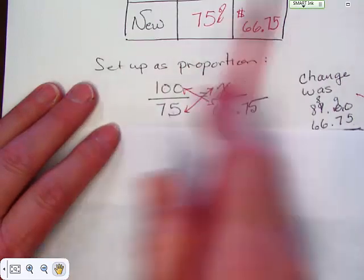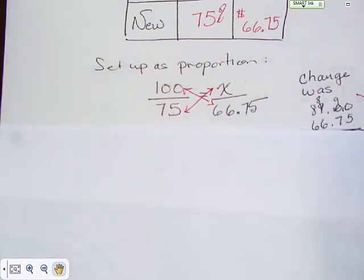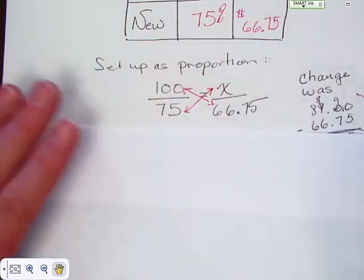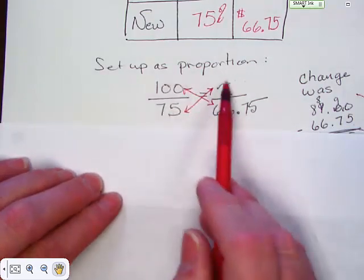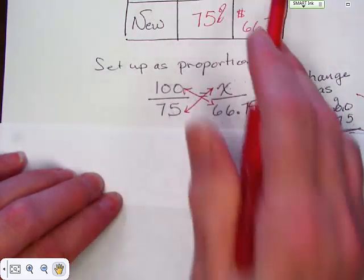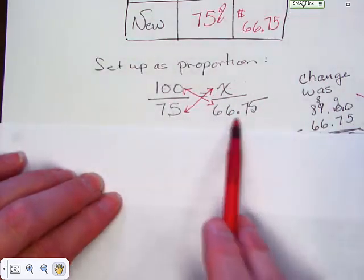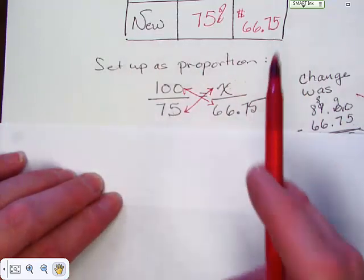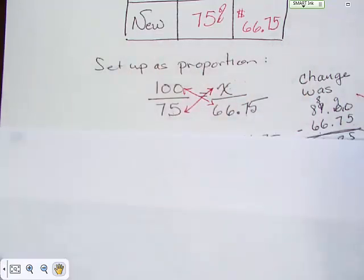Notice how this hundred and the X are in the same row up above, and a seventy five and sixty six seventy five are in the same row up above. So that kind of helps you to make sure you get them in the right order.